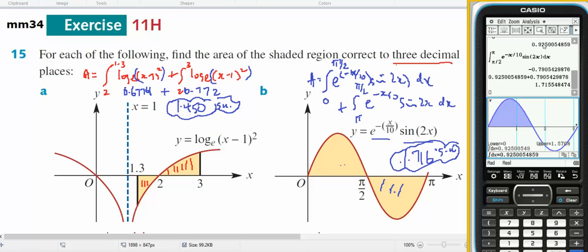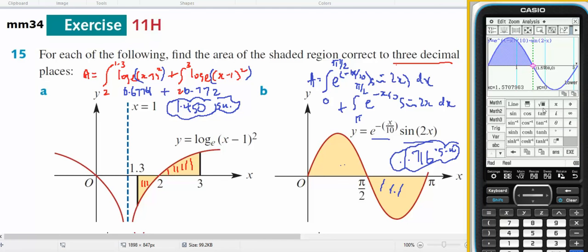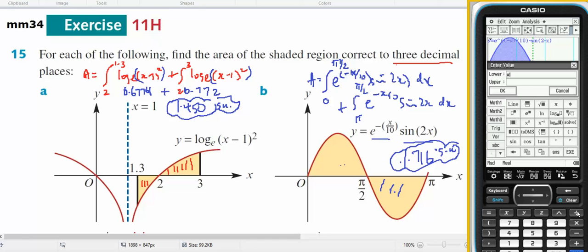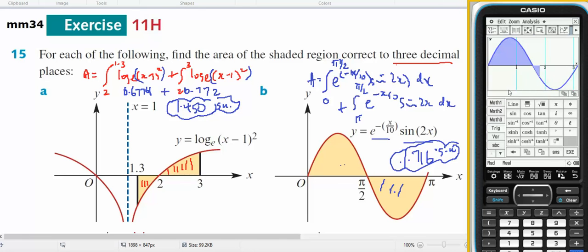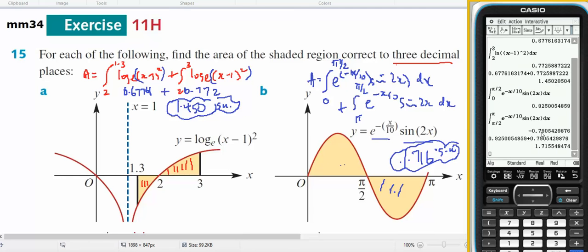If I go analysis, GSOL, integral, from pi on 2, I need to bring up my keyboard and press pi, and I need to divide it by 2 through until pi, ok. And it gives me this area, and it gives me this area, which if I bring up, that was 0.7905, 0.7905, so it's correct.